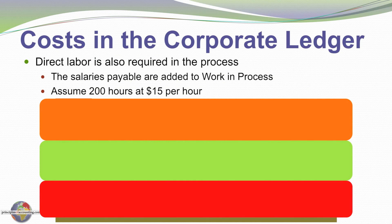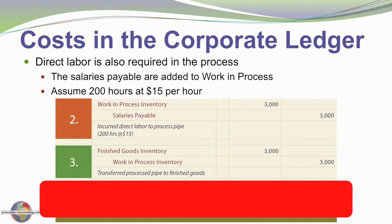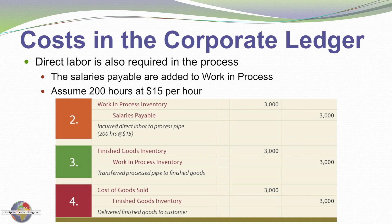Direct labor requires the same process. Assume this job required 200 hours at $15 an hour. We put the $3,000 of labor cost into work in process, crediting salaries payable. We transfer the cost to finished goods — debit finished goods, credit work in process. These are the same accounts, just a different cost component. And when we sell the goods, we increase cost of goods sold and remove that cost from finished goods.